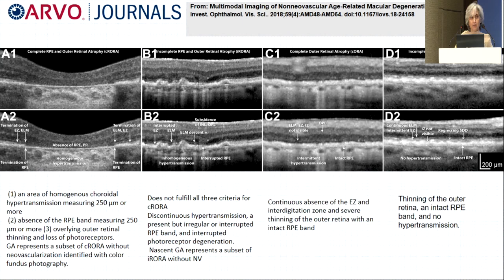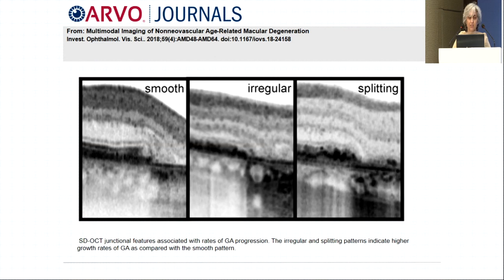The atrophy study group also demonstrated the junctional zone between the area of atrophy and normal retina. They found three patterns — the irregular pattern and a splitting pattern where some photoreceptors are in the intact area and some are split — and these two patterns are at higher risk of progression to atrophy.